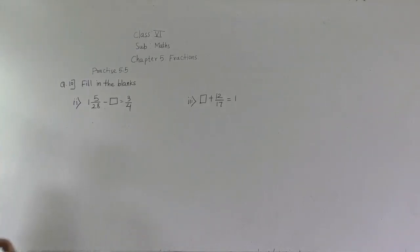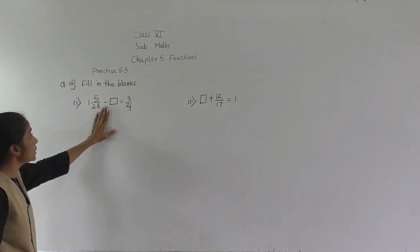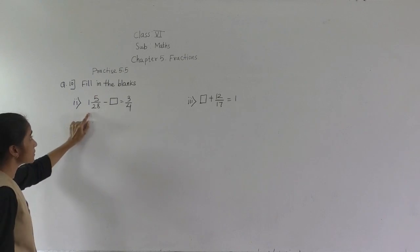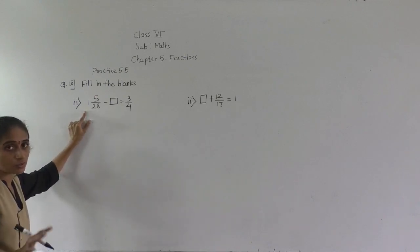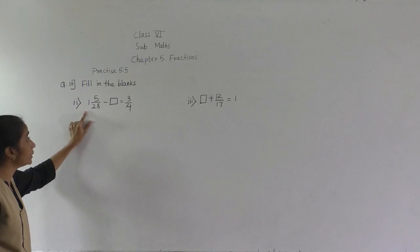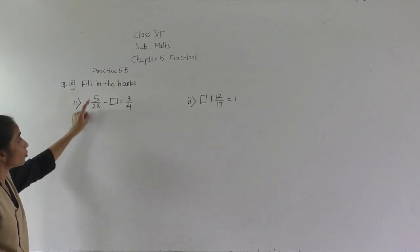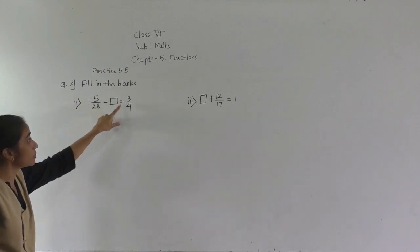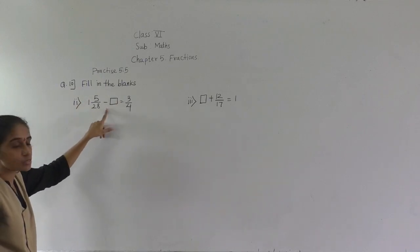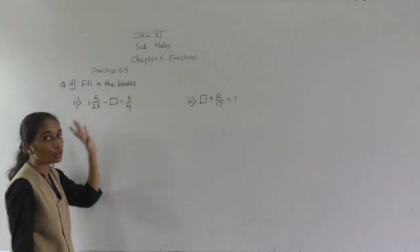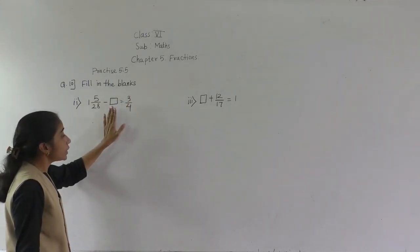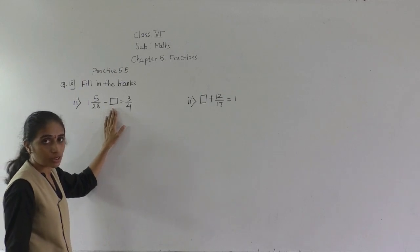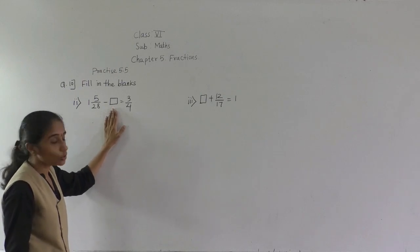Let's solve question number 10, fill in the blanks. Now see here, this second example — the first example is easy so I have not explained it here. See, 1 integer 5 upon 28 minus this blank box is given, is equal to 3 upon 4. So what will come in this blank box, that we don't know.